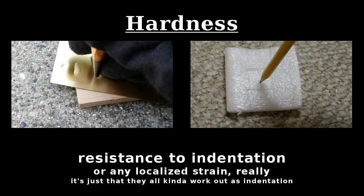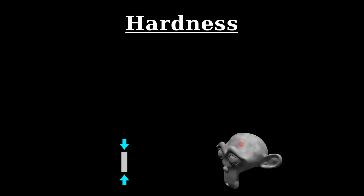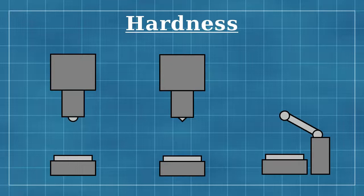Another property of, usually, plastic strain is hardness. It is the material's resistance to indentation. This essentially means localized compression on part of an object's surface, but in practice it's vague enough that many different hardness tests can exist, with each one emphasizing different effects in the material to some extent.